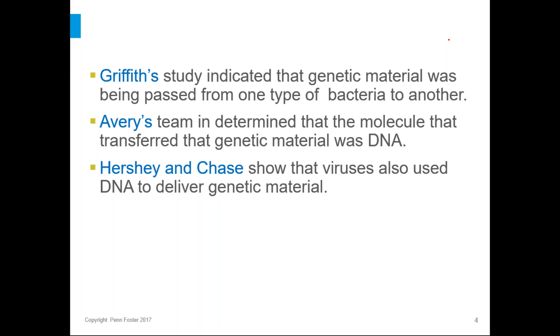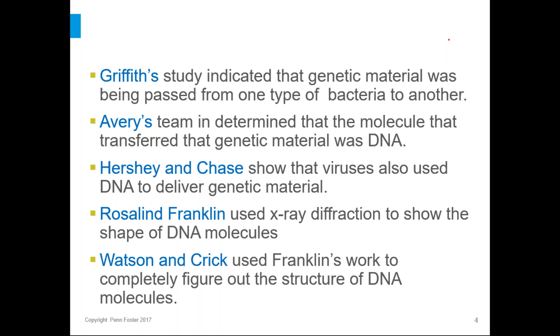So they figured out that it was DNA that did this. And then we had scientists that looked at the structure of DNA to try to figure out how it coded that material. Rosalind Franklin used a technique called x-ray diffraction to figure out the shape of the DNA molecules. She figured out that it's two strands, that it twists in a double helix shape. And this information was used by Watson and Crick, two more scientists in the 50s, that used that work to completely figure out the structure of DNA molecules. And that's what we're going to be focusing on for this session.